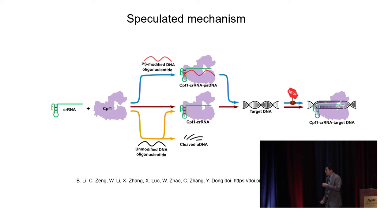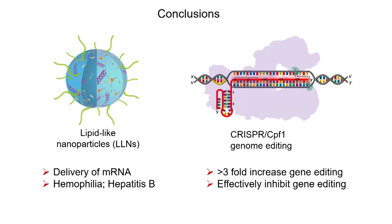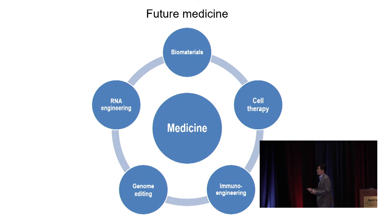In conclusion, we designed lipid-like and lipid-derived nanoparticles that enable efficient delivery of messenger RNA with tunable biodegradability, and showed proof-of-concept in hemophilia and hepatitis B treatment. In the second part, we increased gene editing efficiency over three-fold using chemically modified nucleotides, and identified PS-modified oligonucleotides as potent CPF1 inhibitors. Moving forward, we hope to integrate our expertise in biomaterials, RNA engineering, genome editing, immunoengineering, and cell therapy to translate these technologies into more effective treatments for patients.